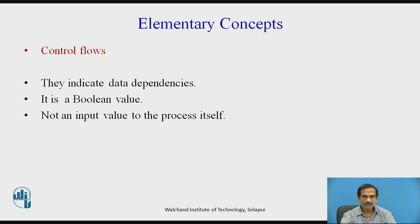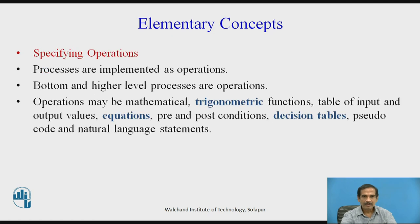The next concept is control flows, which indicate data dependencies. It is a boolean value, not an input value to the process itself. Specifying operations are processes implemented as operations, and both bottom and higher level processes are operations. Operations may be mathematical or trigonometric functions, table of input and output values, equations, pre and post conditions, decision tables, pseudo-code, and natural language statements which tell you what has to be done with the cross-sequence of events on rows and columns.